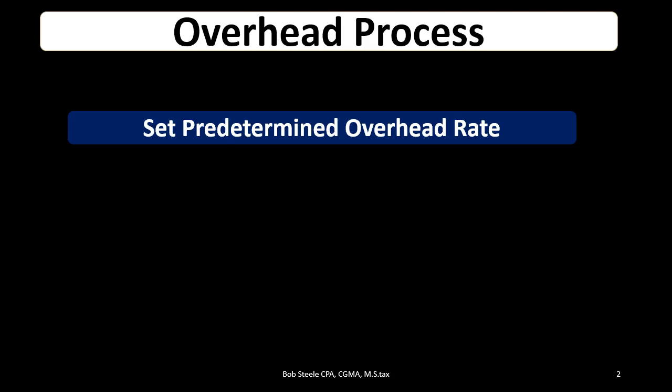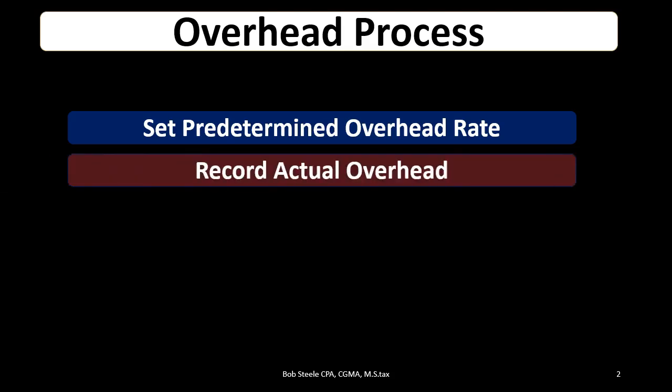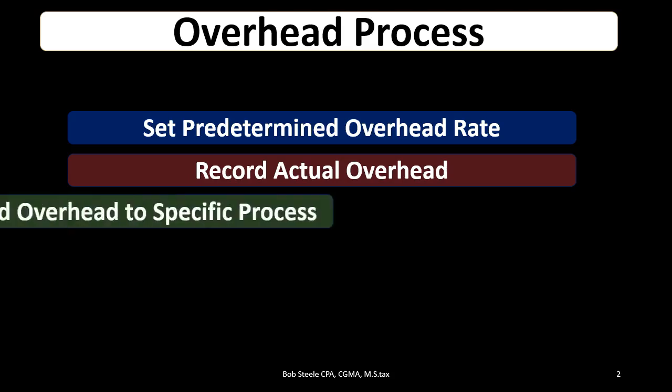First, we typically set up the predetermined overhead rate based on last year's information. We then record actual overhead. We know what the actual overhead is and we're going to record it, but we probably don't know which department it needs to go to. So the actual overhead is not going directly into work in process, but to the departments.